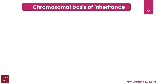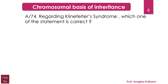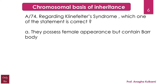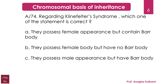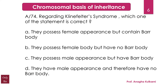The next question relates with the chromosomal basis of inheritance and is regarding Klinefelter syndrome. Which one of the statements is correct? Options: A. they possess female appearance but contain bar body; B. they possess female body but have no bar body; C. they possess male appearance but have a bar body; D. they have male appearance and therefore have no bar body. The correct answer is C — they possess male appearance but have a bar body.